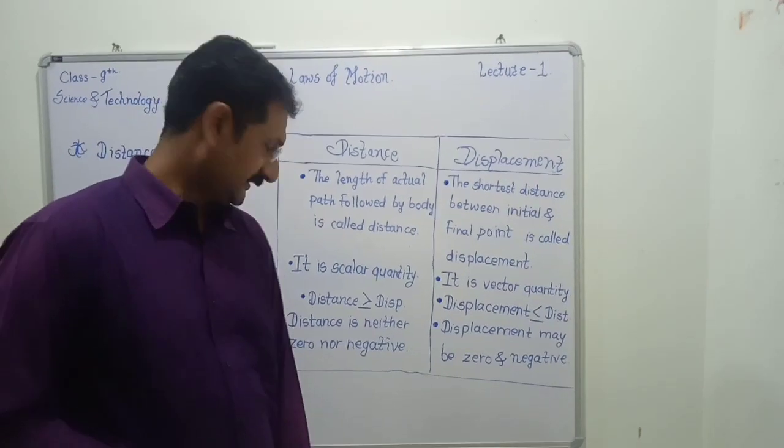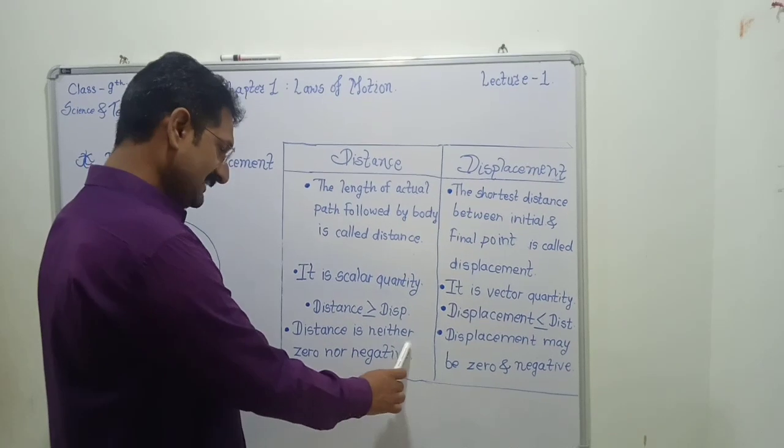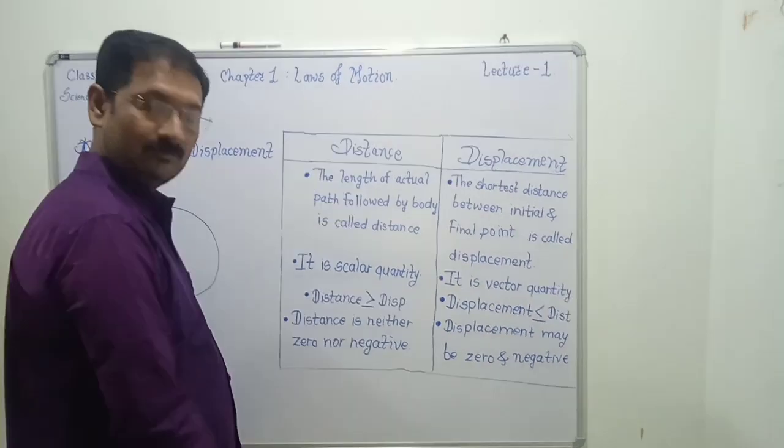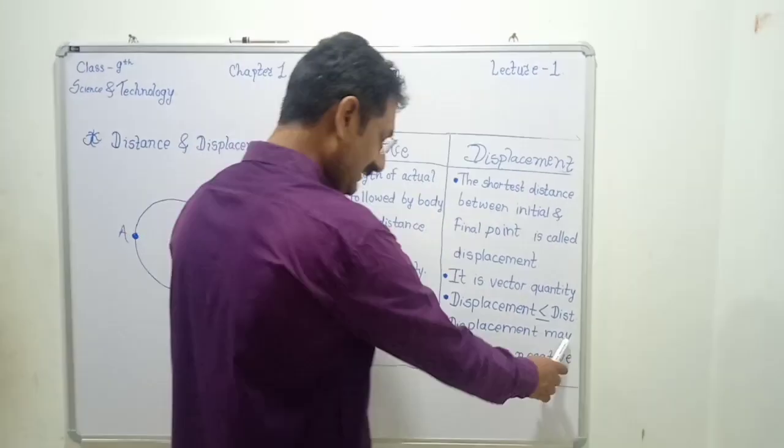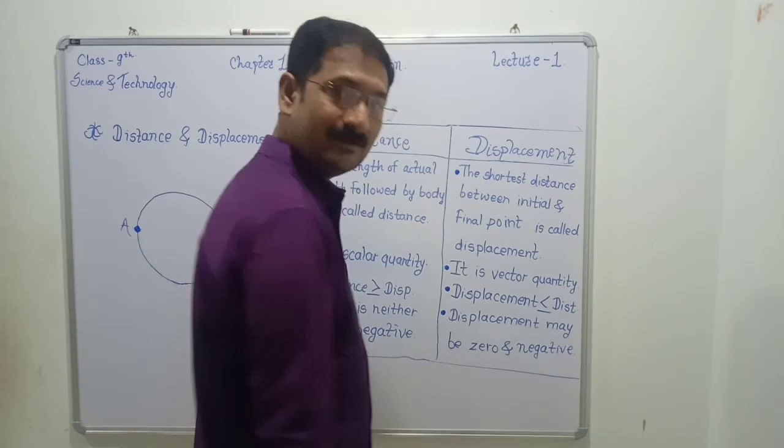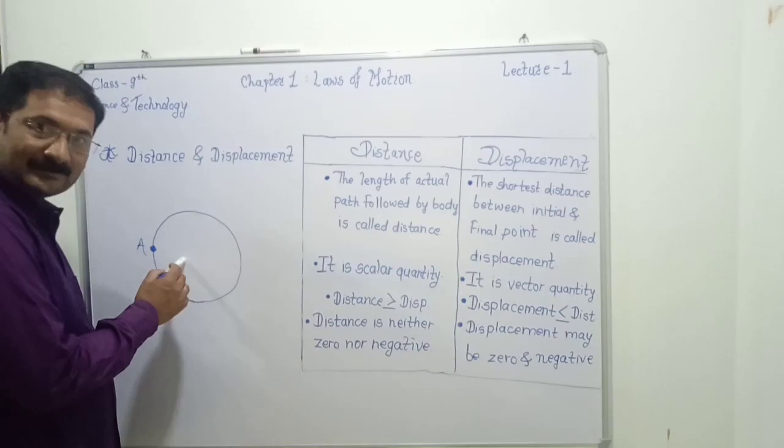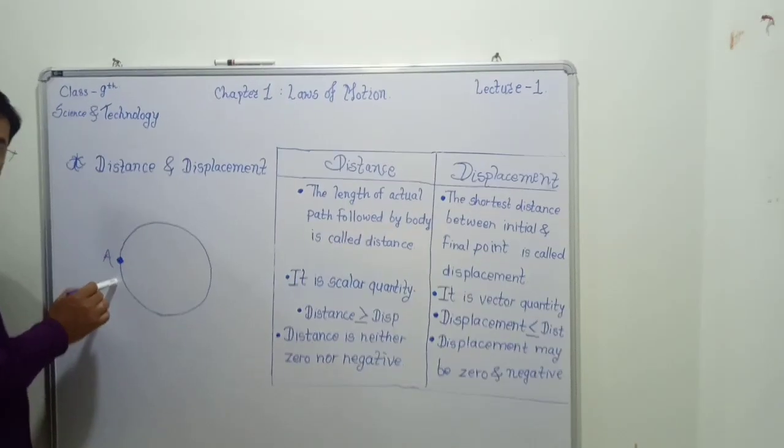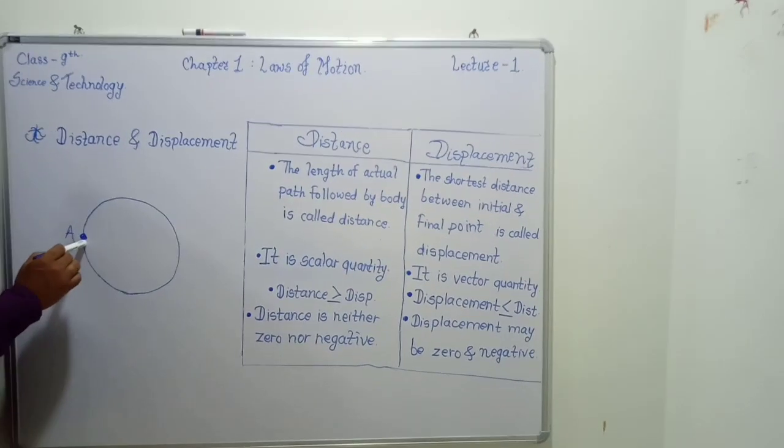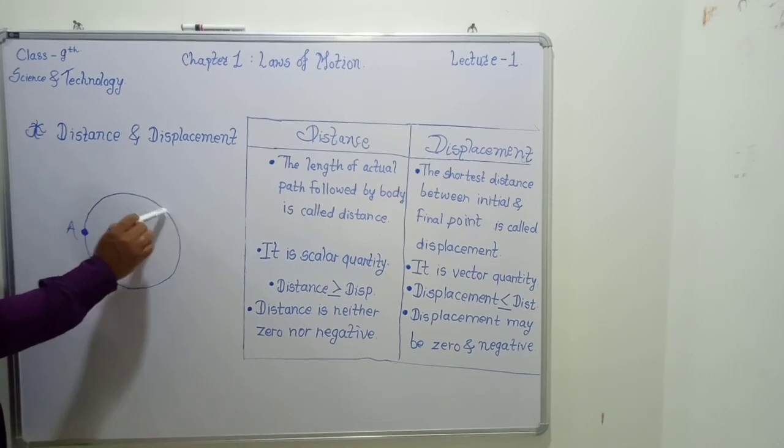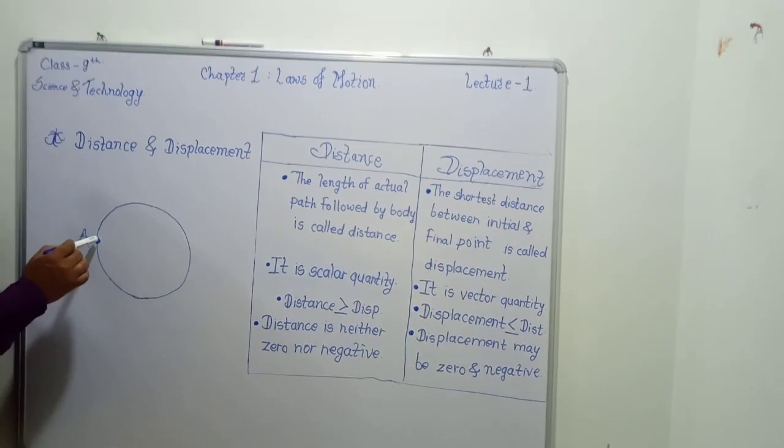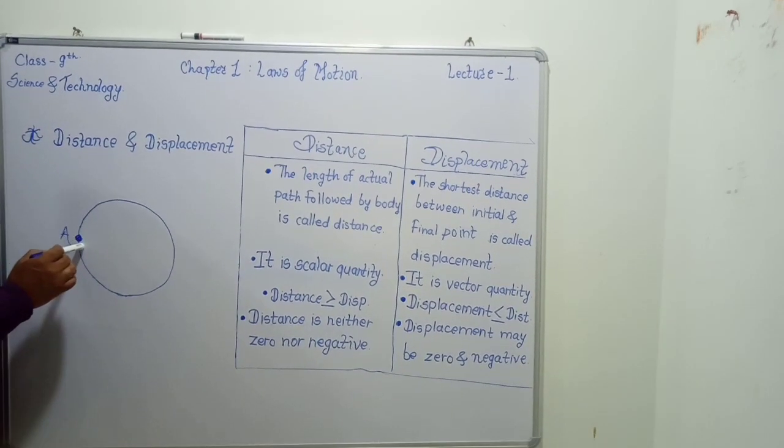Let's consider the next point. Distance is neither zero nor negative. But displacement may be zero or negative. For that, consider and observe this figure. If object starts to move from point A, it continuously goes on in a circular manner and comes again to point A.